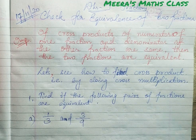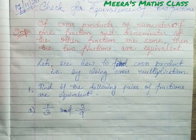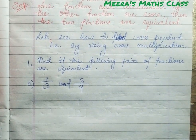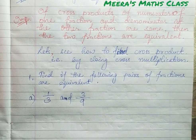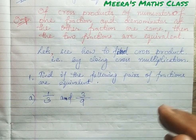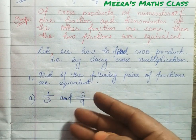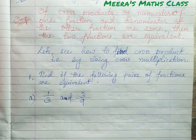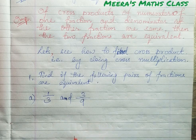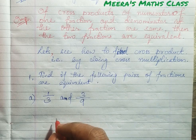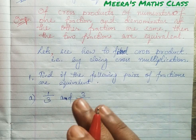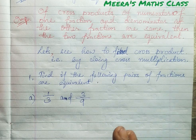In worksheet 4 you will find the first question: find if the following pairs of fractions are equivalent or not. I have chosen the first example — let me do it for you, then only you can understand. We need to check whether 1/3 and 3/9 are equivalent or not.